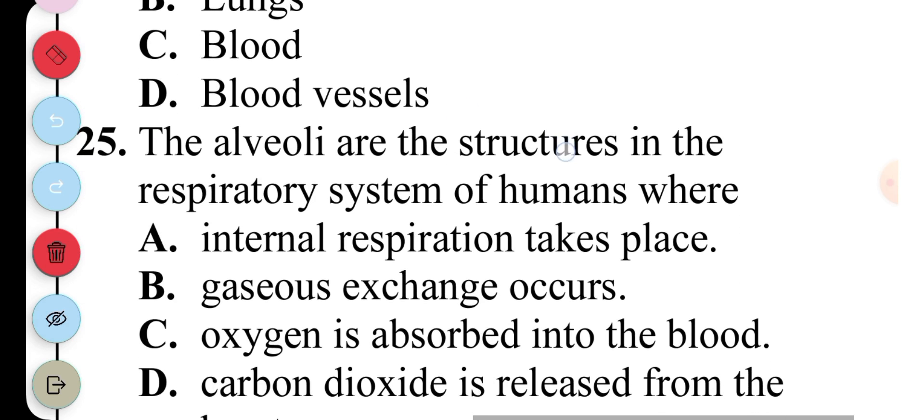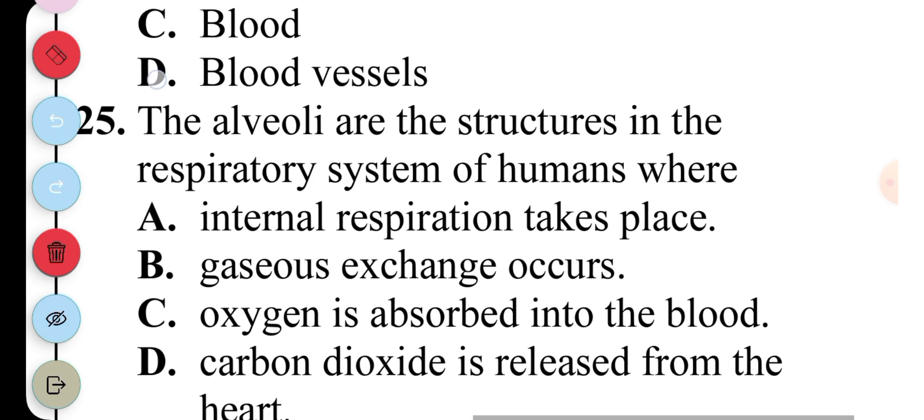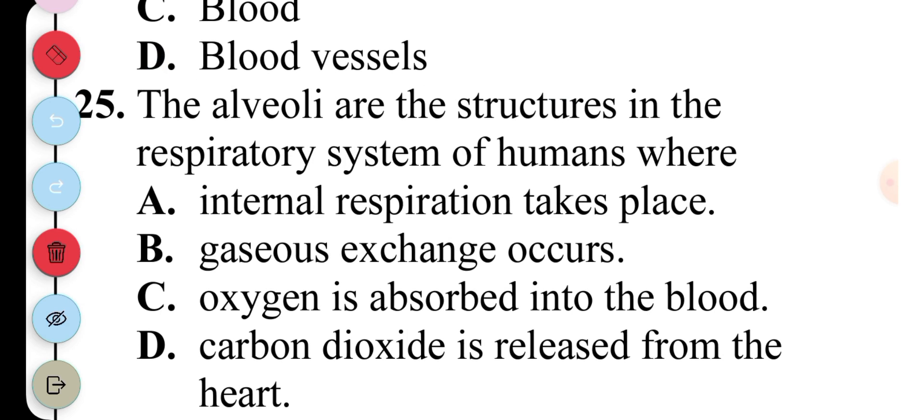Question 25: The alveoli are the structures in the respiratory system of humans where A. Internal respiration takes place, B. Gaseous exchange occurs, C. Oxygen is absorbed into the blood, D. Carbon dioxide is released from the heart. The answer to question 25 is B, Gaseous exchange occurs.